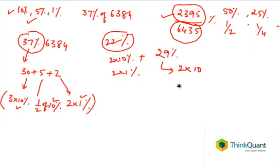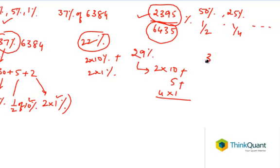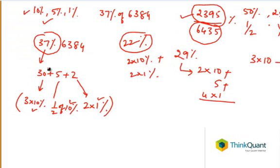2 × 10 (giving us 20) + 5 + 4 × 1, or we can do 3 × 10 minus 1%. Depending on your comfort level, you can use whichever reference point. Now coming back to 37%, we've split it as 30 + 5 + 2.